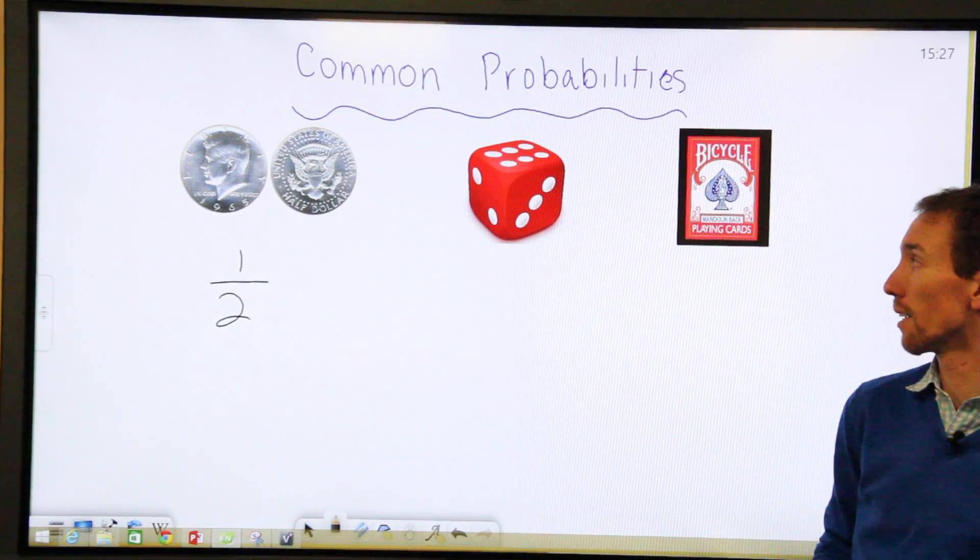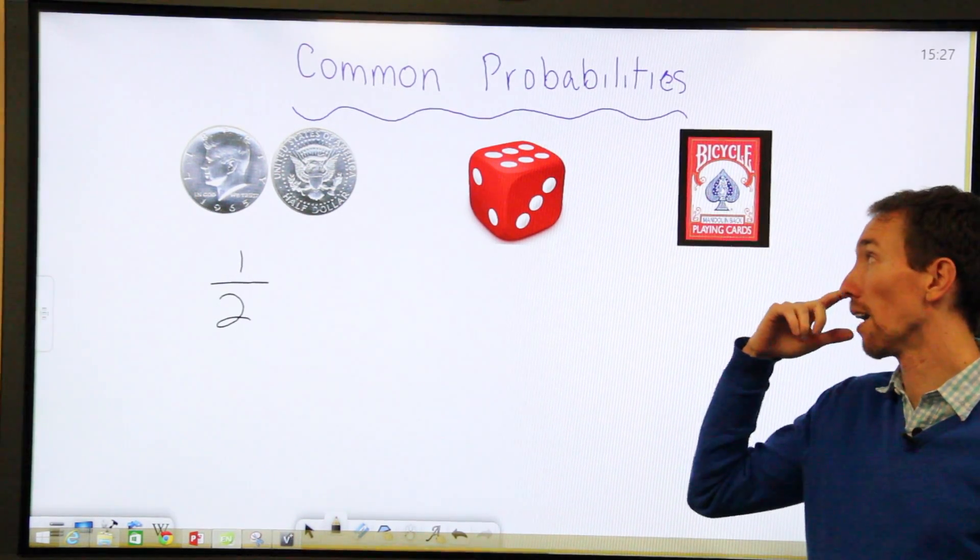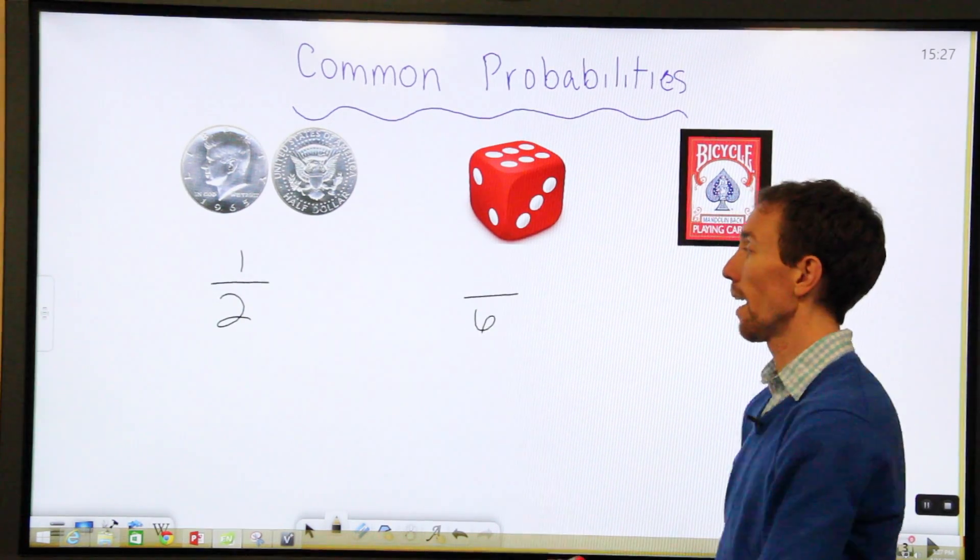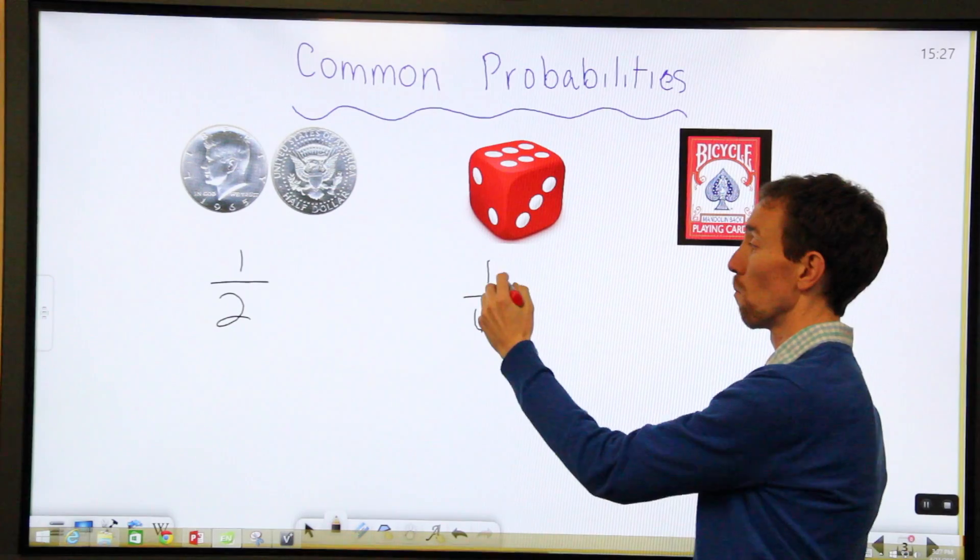With a dice, or what's called a regular die, you have six different numbers as the number of outcomes. And usually, you're only looking for one of the numbers. So one out of six.